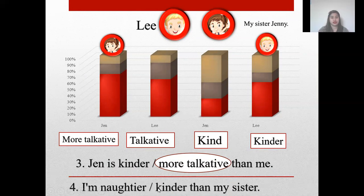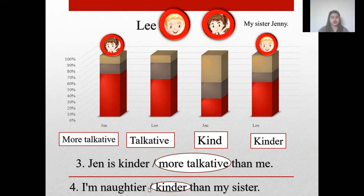Number 4 — I'm kinder than my sister. Look at the data. Lee and Jen. What is your answer? Kinder. Good job! I'm kinder than my sister.